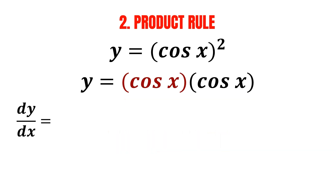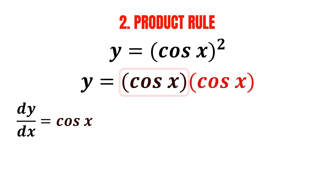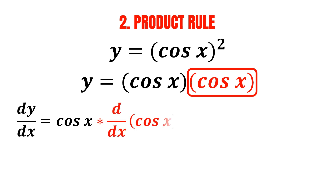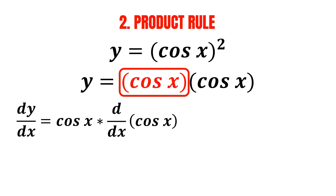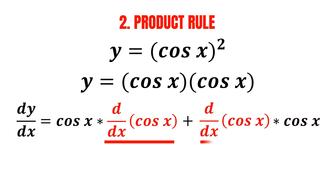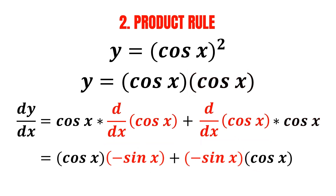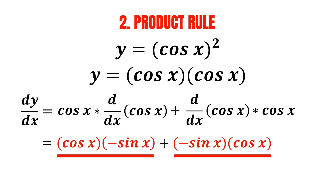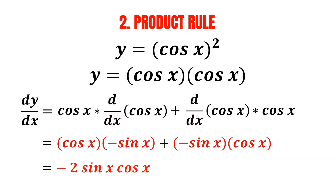By using the product rule, we first keep the first part of the function the same — cosine of x — and multiply it by the derivative of the second part, which is the derivative of cosine of x. Then, plus the derivative of the first part, which is also the derivative of cosine of x, multiplied by the second part without changing it. The derivative of cosine of x is negative sine x. Since both terms are actually the same, we add them up and end up with negative 2 multiplied by sine of x multiplied by cosine of x — and we've found the derivative.